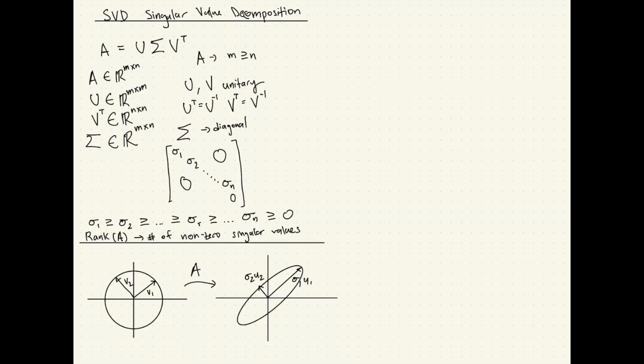So what just happened? Well, we took, let's write it down here. A times v1 gave us sigma 1 u1. A operating on v2 gave us sigma 2 u2.